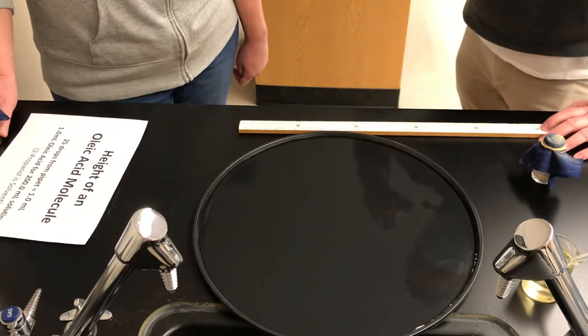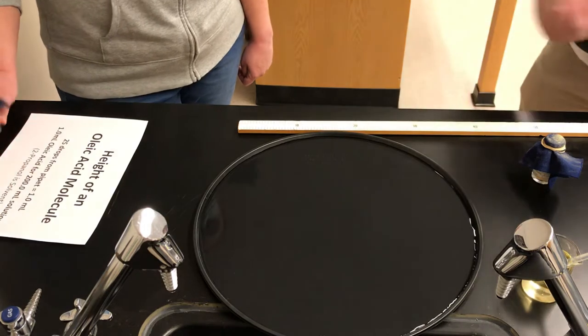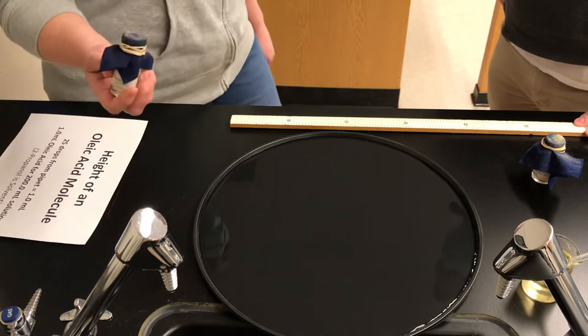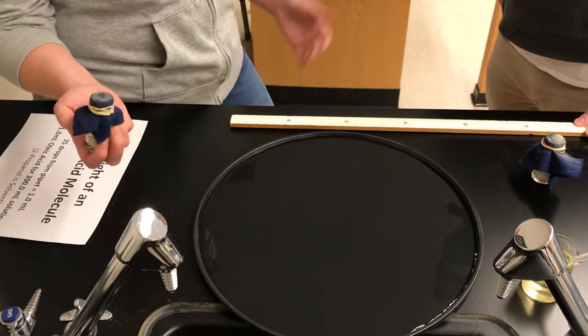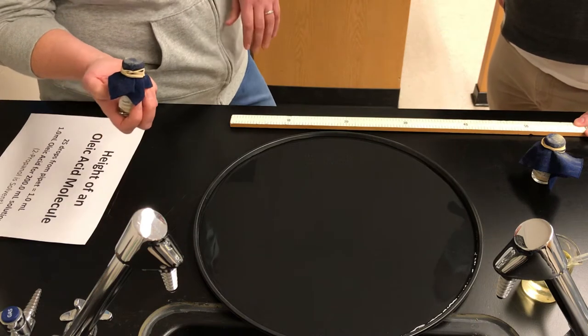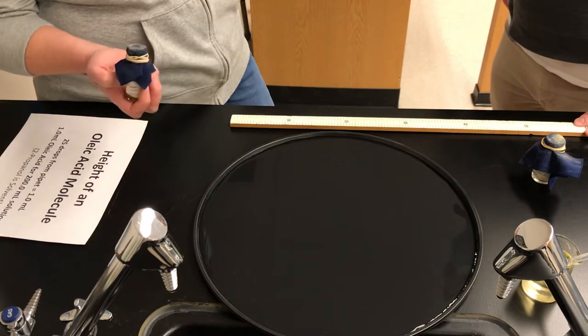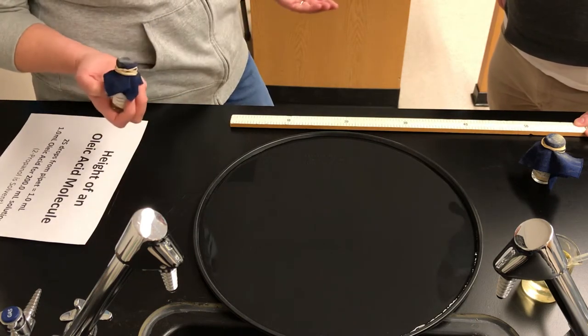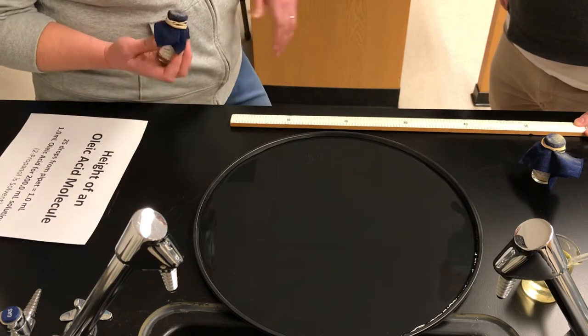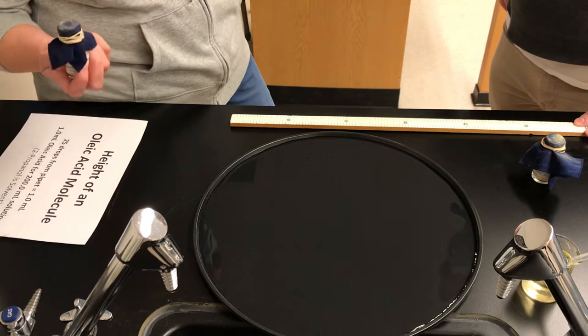And Ms. Watts, what are you going to be adding to that? So we're going to be adding very fine powder to the surface of the water. And so this is going to be important because when we add our drop of oleic acid solution, it's going to cause the powder to spread out to the perimeter of the pan. That's going to allow us to measure the diameter for which the slick spread out.